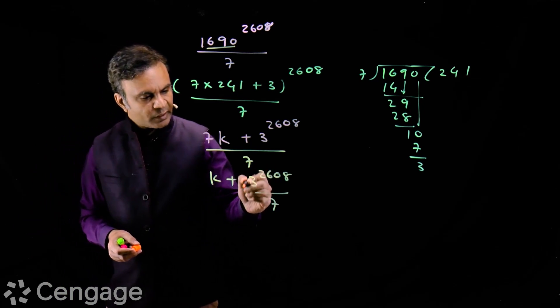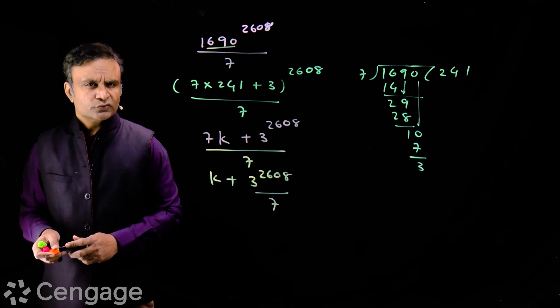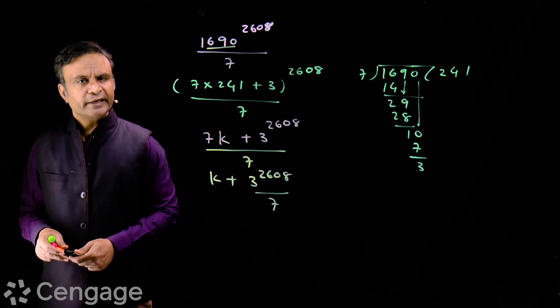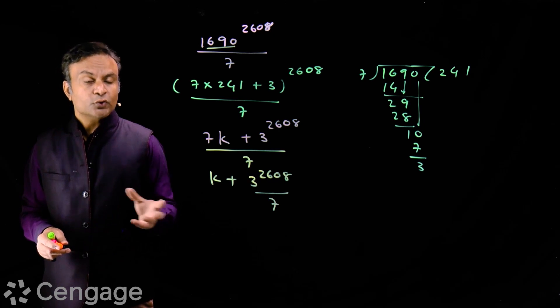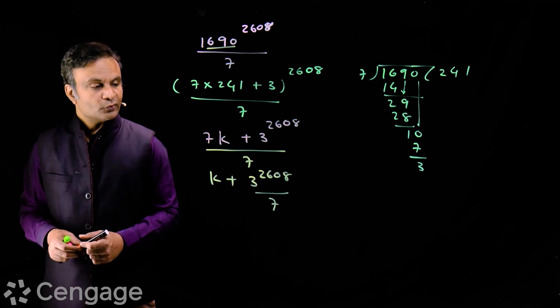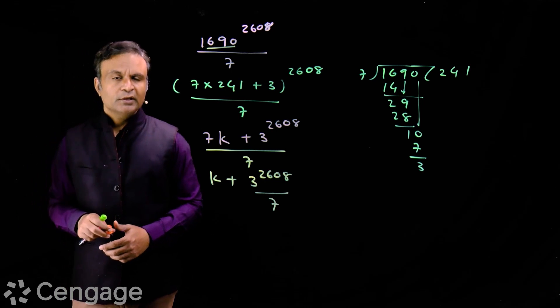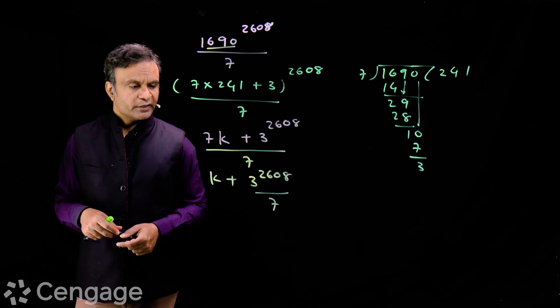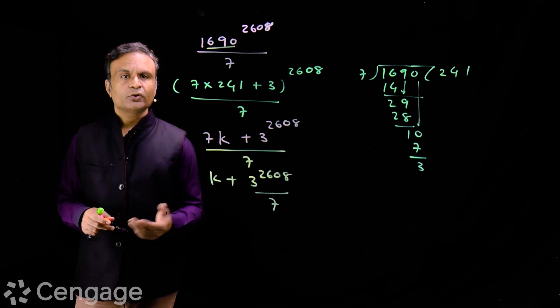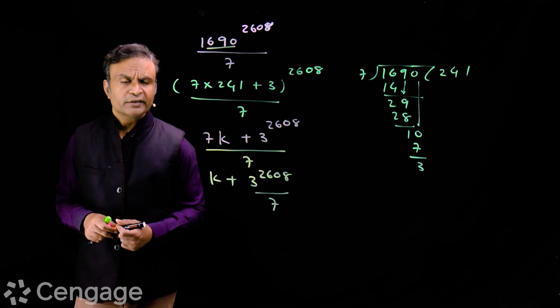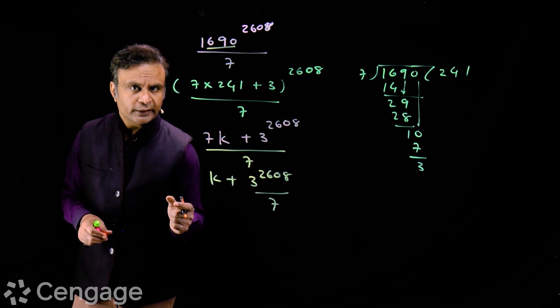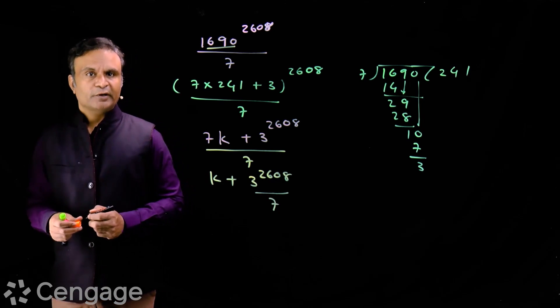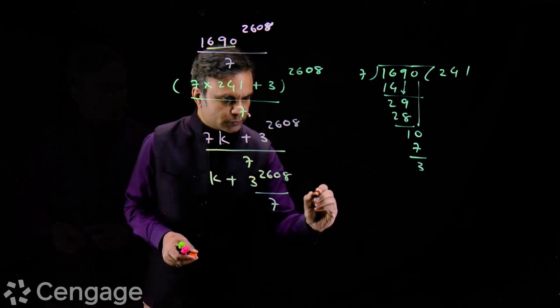We consider the power of 3 so that the resulting number is close to 7 or multiple of 7. 3 square is 9, not close to 7, not so close to 7. The difference between these two is 2. But we want something with difference 1. So we consider 3 cube. 3 cube is 27 and 27 is close to 28 with difference 1 where 28 is multiple of 7.